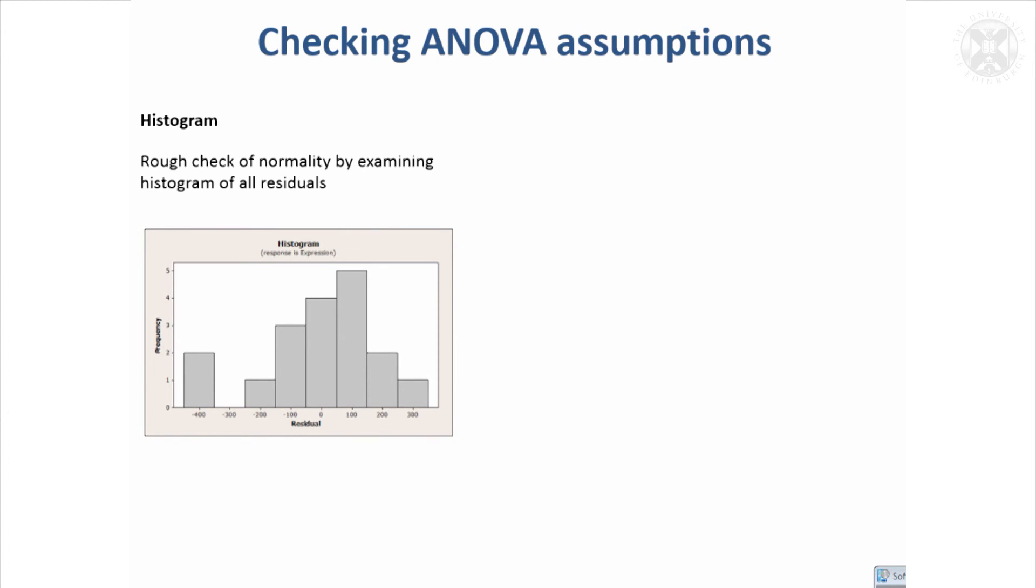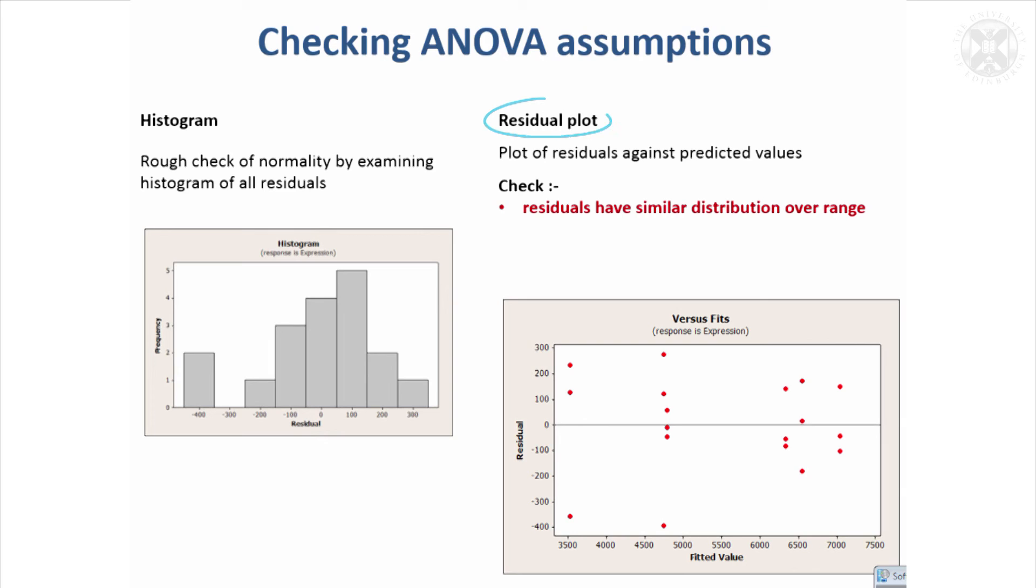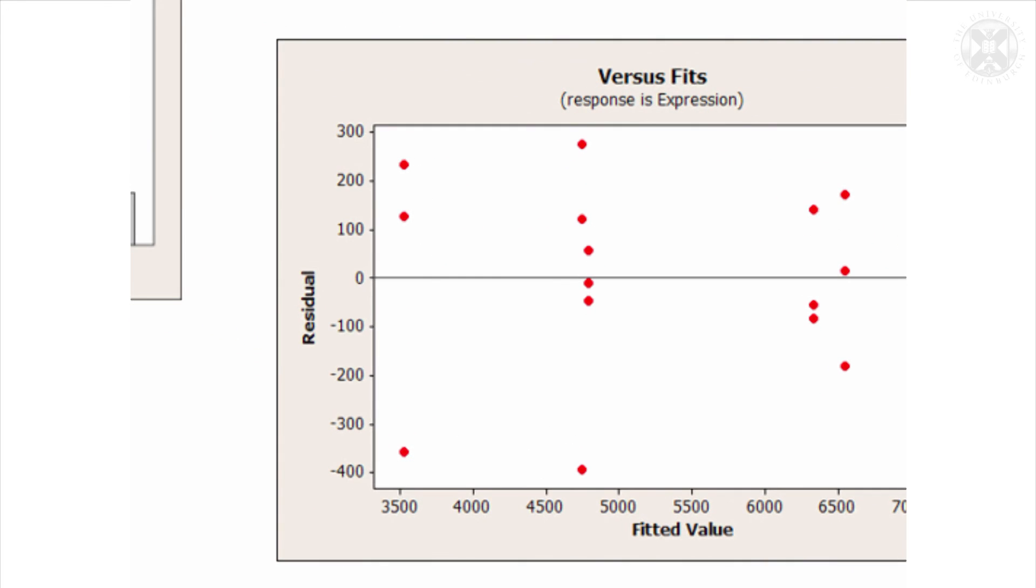Another way to check is to use something called a residual plot. The residual plot is a plot of the residual values on the y-axis against the fitted values by the model—so here that's going to be the group means. What you want to see is a fairly even distribution over the range of fitted values. It's a bit hard to tell here because we've only got three observations per treatment, but there's nothing in this plot I found too alarming. There wasn't a sort of strong kind of line going upwards, and there's a bit of funneling but it wasn't clear cut.